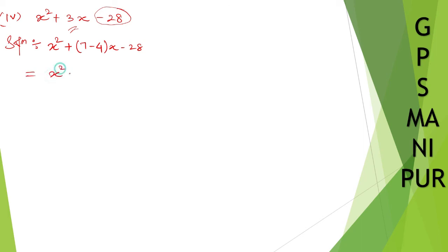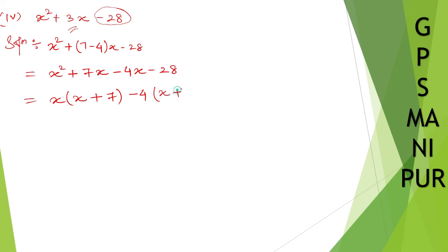Expanding: x squared plus 7x minus 4x minus 28. Take x as common from the first two terms: x(x plus 7). Take minus 4 as common from the last two: minus 4(x plus 7). Now take (x plus 7) as common. What remains is x minus 4. So the final answer is (x plus 7)(x minus 4). Thank you so much, we will meet in the next video.